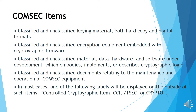These are the COMSEC items: classified and unclassified key material in both hard copy and digital format; classified and unclassified encryption equipment embedded with cryptographic firmware; classified and unclassified materials, data, hardware, and software under development which embodies, implements, and describes cryptographic logic; and classified and unclassified documents relating to the maintenance and operation of COMSEC equipment. In most cases, one of the following labels will be displayed on the outside of such items: Controlled Cryptographic Item, Controlled Correlational Identifier (CCI), Telecommunication Security (TSEC), or Cryptography/Crypto.